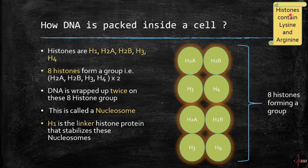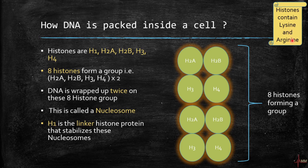Remember this: histones contain the amino acids lysine and arginine. Histones are proteins, and proteins are made of amino acids. A helpful mnemonic — histones are 'liars': L for lysine and AR for arginine.